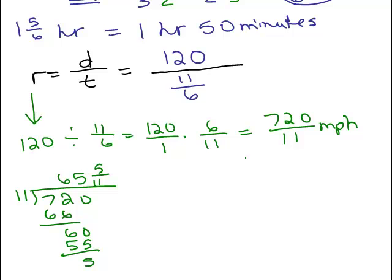So 65 and 5 elevenths. Okay, so that's, you know, a little bit more than 65 miles per hour. And usually, now, of course, if you were going to round it, you know,